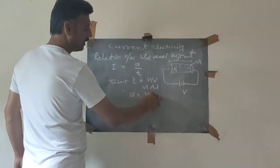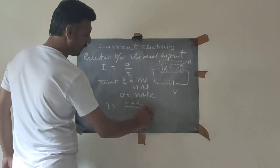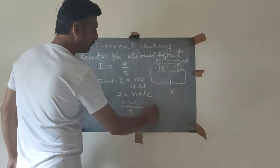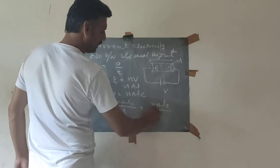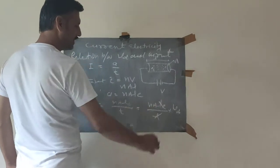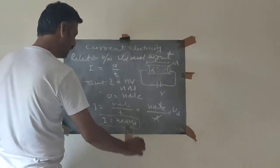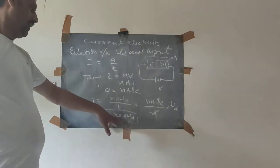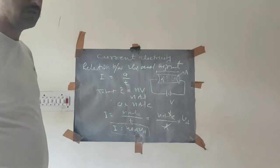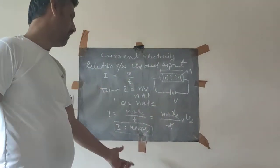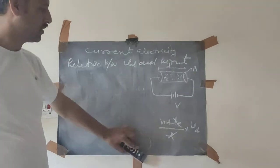Total charge Q equals total number of electrons times electronic charge. Therefore I = NALE/t. If the average distance covered by the electron equals the length of the conductor, we can write I = NALE/(L/Vd), which gives I = NEAVd. Therefore drift velocity is directly proportional to current.